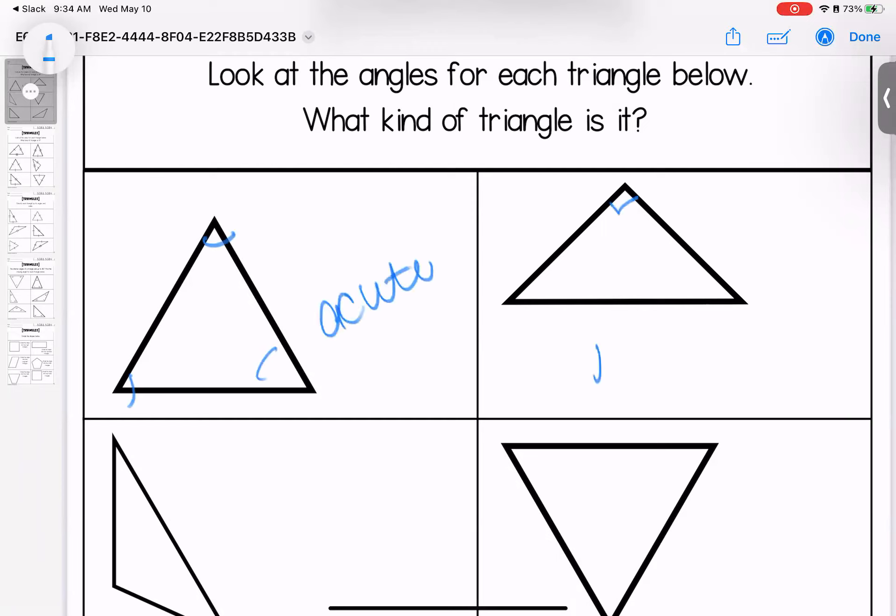One right angle makes it right. Remember, one right or one obtuse is going to make that triangle right or obtuse.